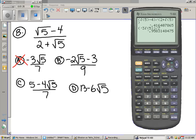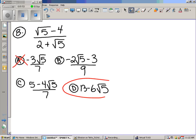You would continue doing this for choices B and C. Let's check choice D. Let's just see if it's the one that works. Thirteen minus six square root of five. Hit enter. And yeah, it's the one that matches. Good to go.